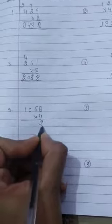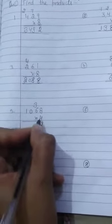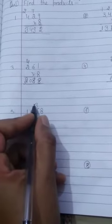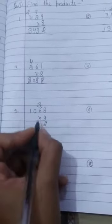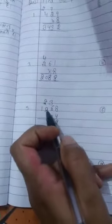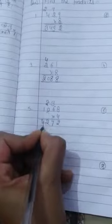Question number 5. 4 times 8 is 32. We will write 2 here and 3 here. 4 times 6 is 24, 24 plus 3 is 27. We will write 7 here and 2 here. At the place of 100 we have 0. When we multiply any number with 0 we get 0. 4 times 0 is 0. So here 2 is carried, so we will write 2. Now 4272 is the answer.